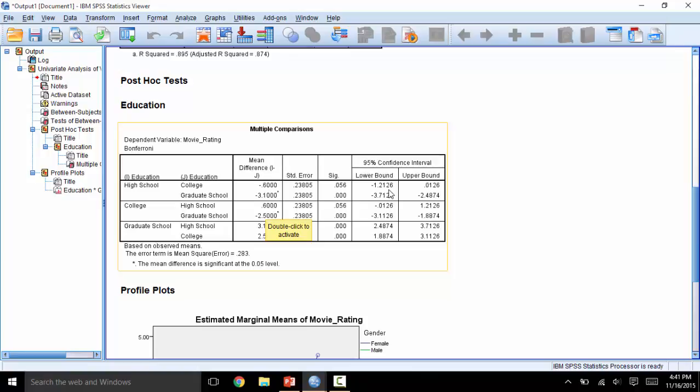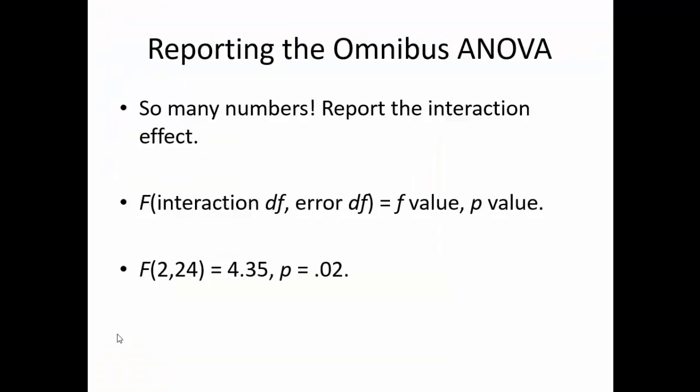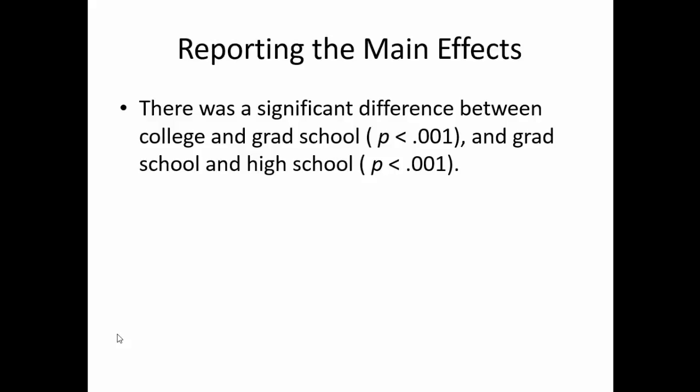Now let's discuss how to write up this ANOVA. The omnibus ANOVA will be written up accordingly. In context, this would be explained as a significant interaction between gender and education on movie score. Next, we would report the main effects — the differences between each independent variable without the other. There is a significant difference between males and females on the movie score, p less than .001. We simply report the p-value from the omnibus ANOVA because only two levels exist for this variable.